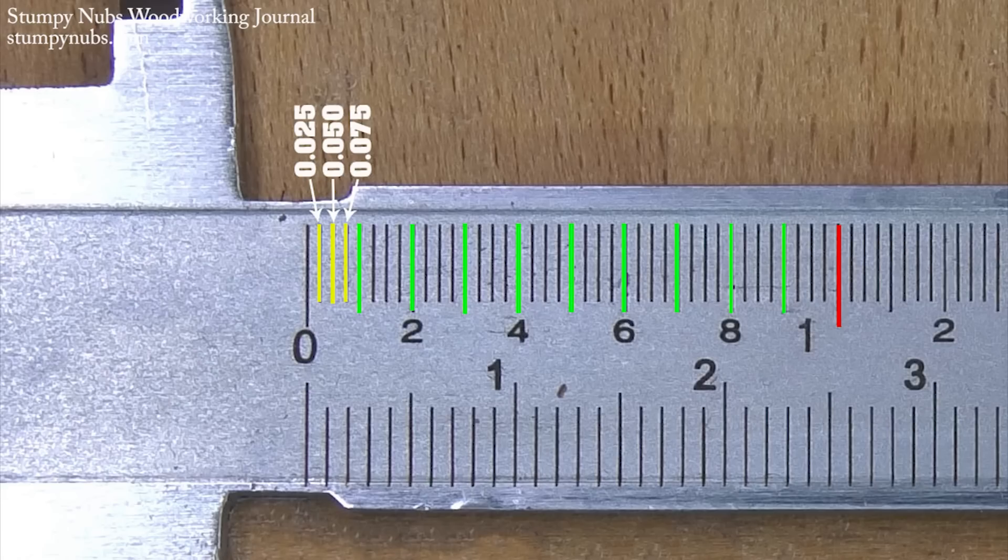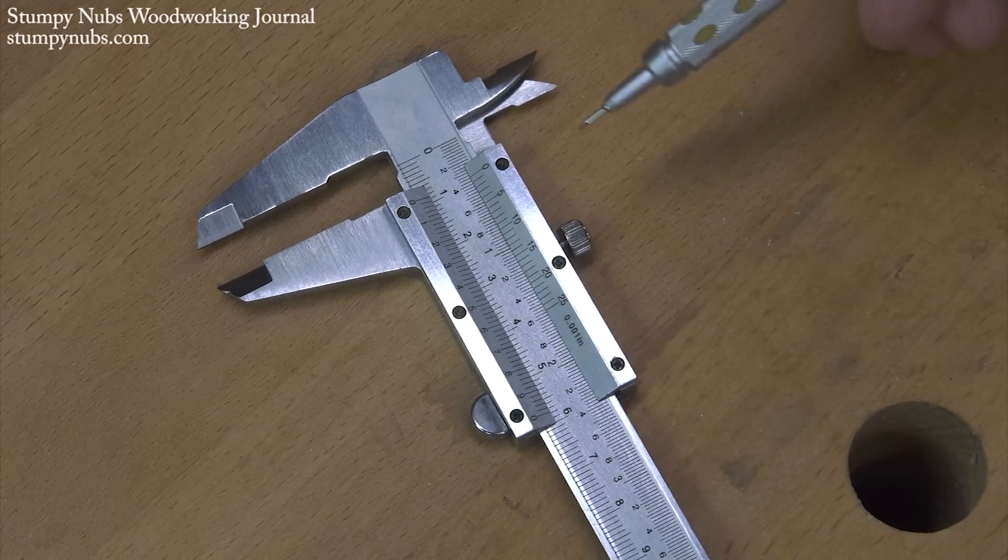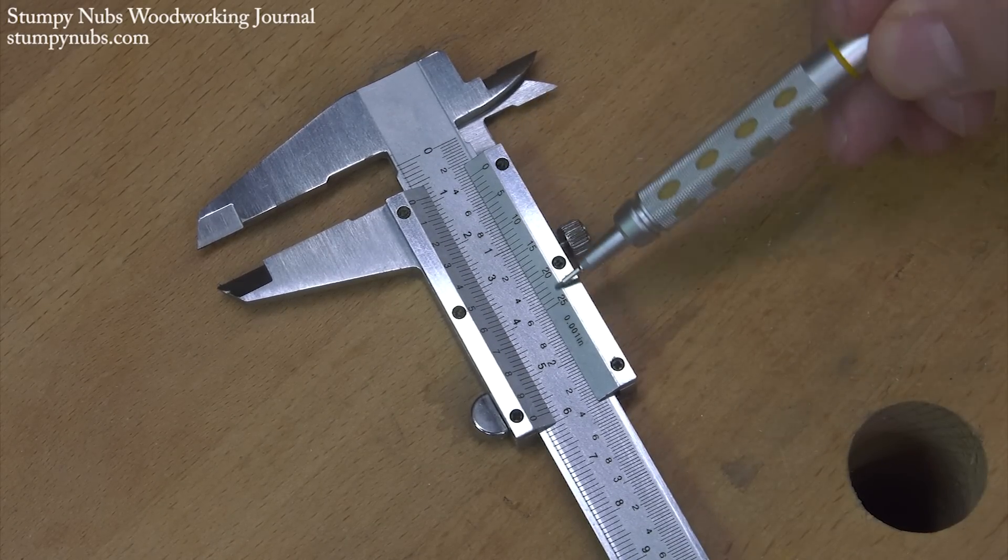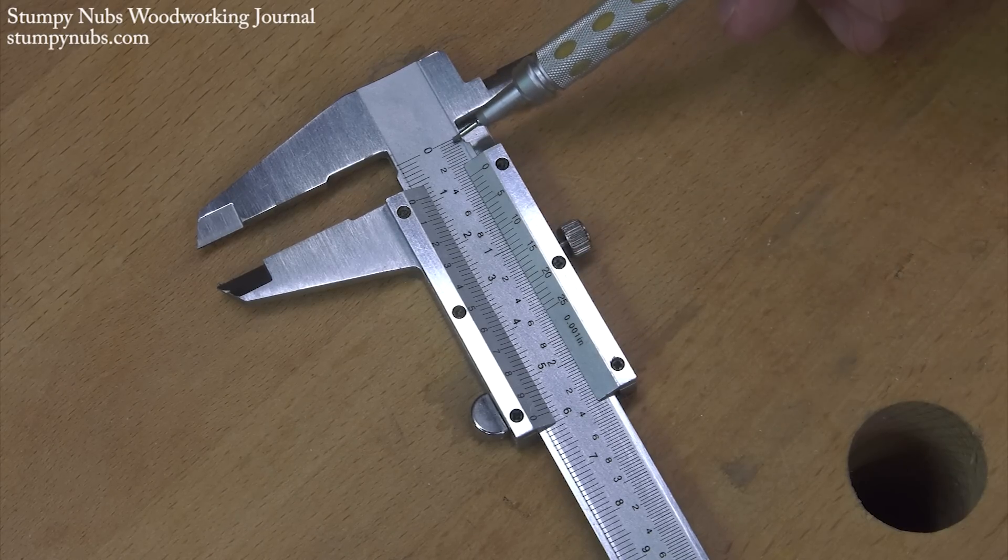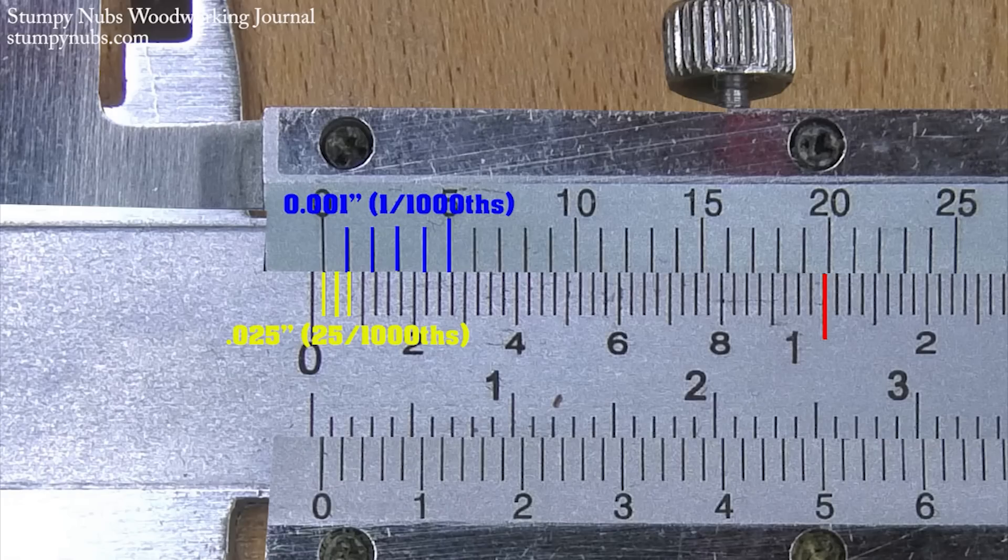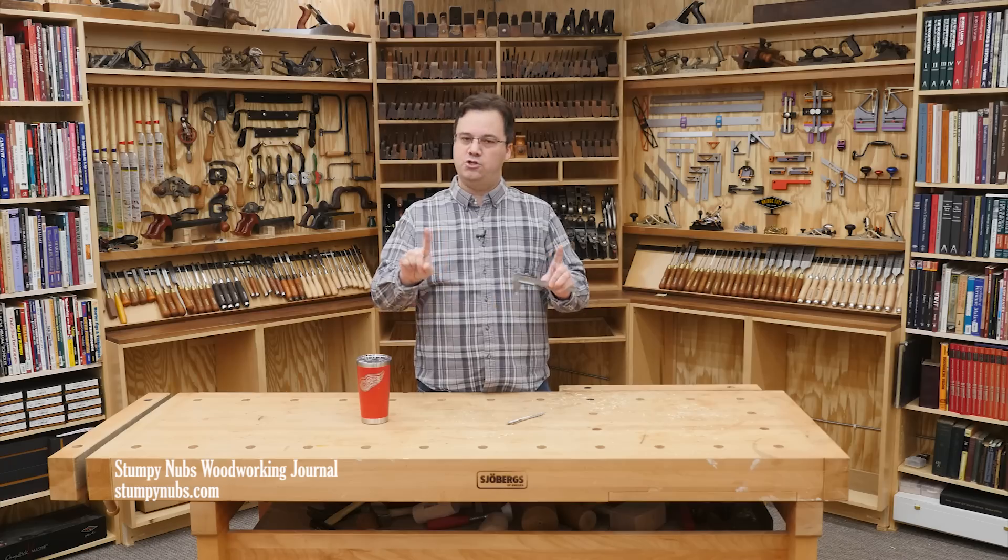But what if you want to get really accurate and divide your increments even further than that? Well there isn't room to add more lines between each of the small marks on the main scale. That's where the vernier scale comes in. It's as if the twenty-five marks on the upper vernier scale were squeezed between each of the smallest marks on the lower scale. Remember, I said the smallest marks on that lower main scale represented twenty-five thousandths of an inch. Well the twenty-five marks on the vernier scale are those twenty-five thousandths.